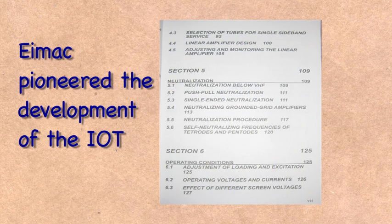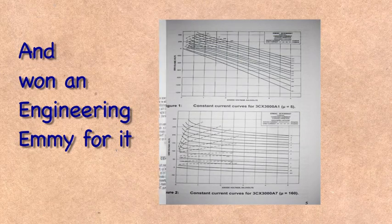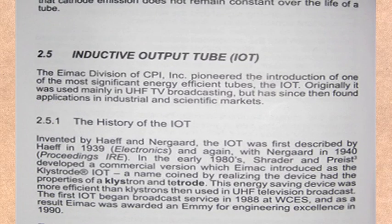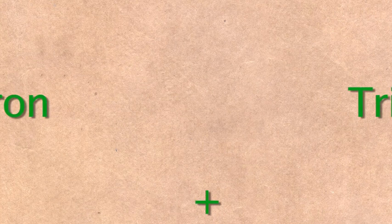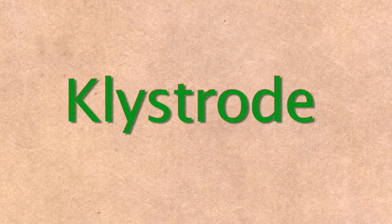It took many decades to arrive at today's IoT. And it wasn't until 1988 that Inmac, a division of CPI, developed the current power amplifier tube in use around the world. At first they called it a klystrode because it combined the properties of a klystron and a triode tube.